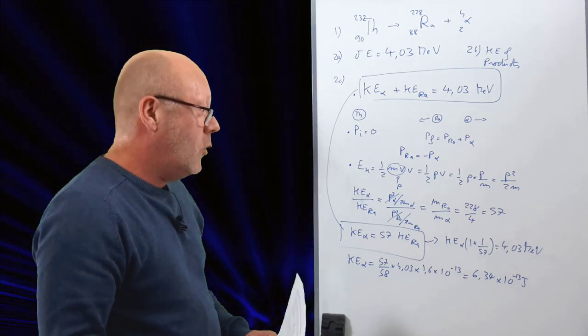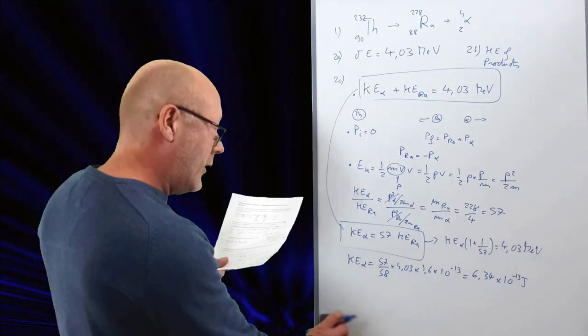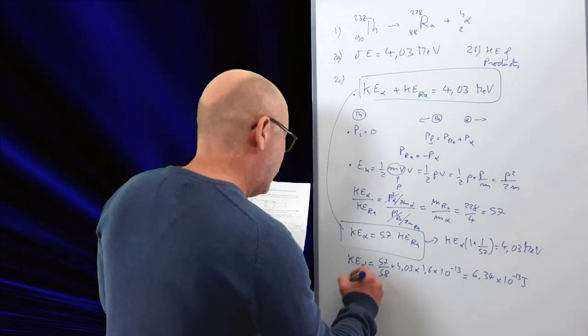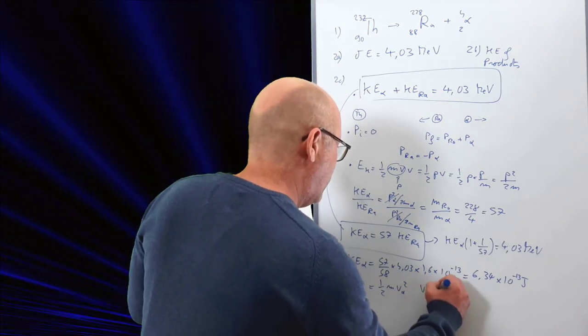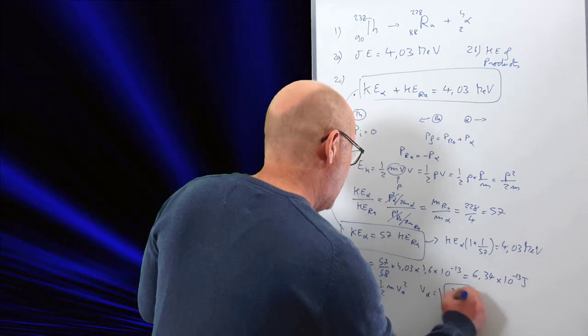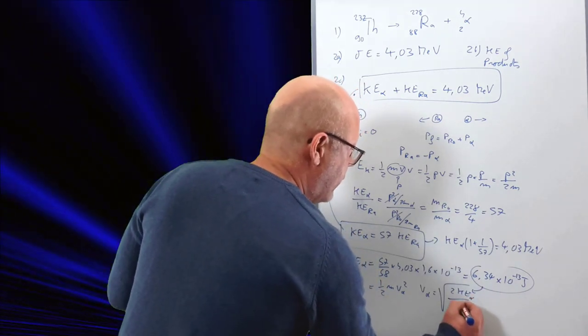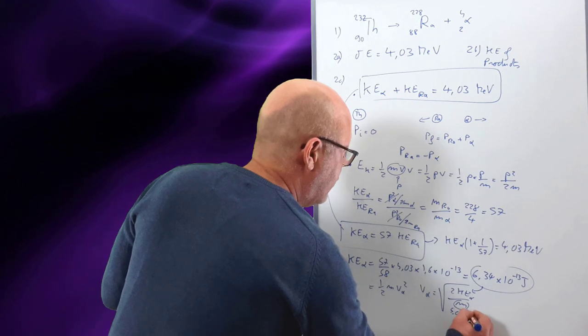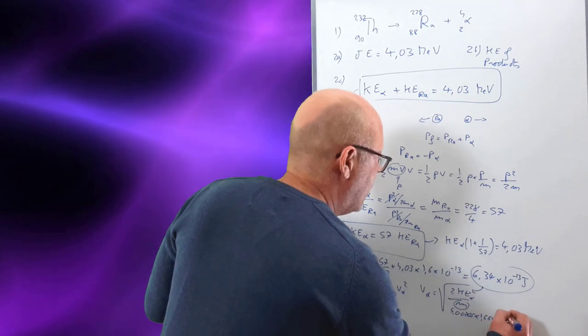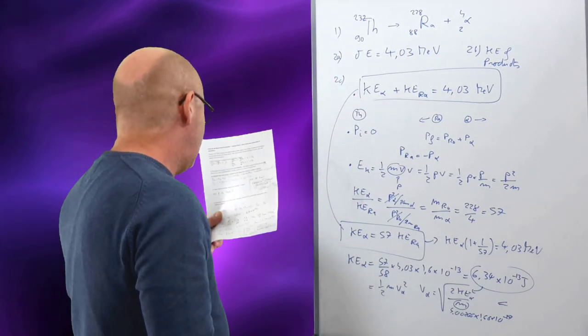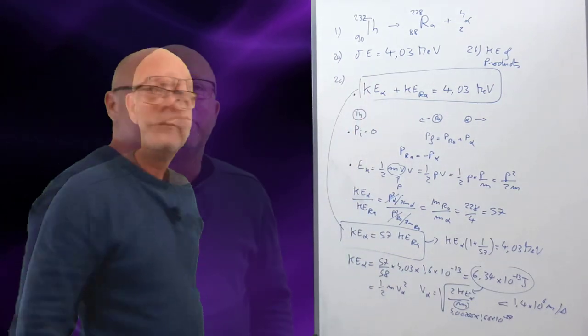Yeah. Well, now it's pretty simple because I've got the kinetic energy. I know the mass of the alpha. So I don't have much space on the board. I've got this is equal to one half M V alpha squared. So I just rearrange. V alpha equals square root of 2 KE over M. This is the KE of the alpha. M is going to be 4.00266 something multiplied by the mass in kilograms, 1.66 by 10 to the minus 27. Which gives me in the end 1.4 million meters per second. Voila.